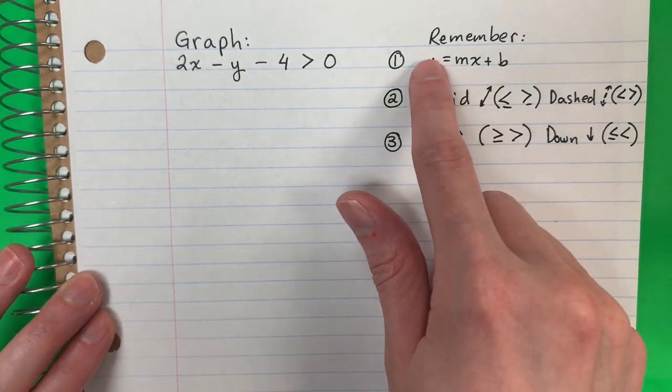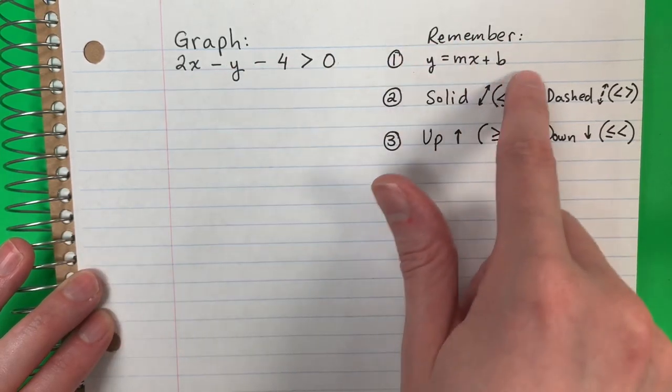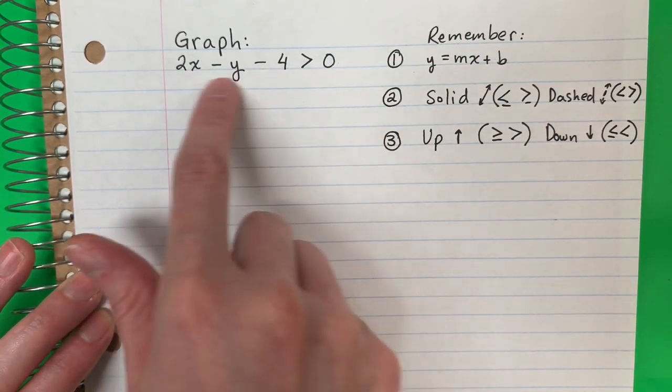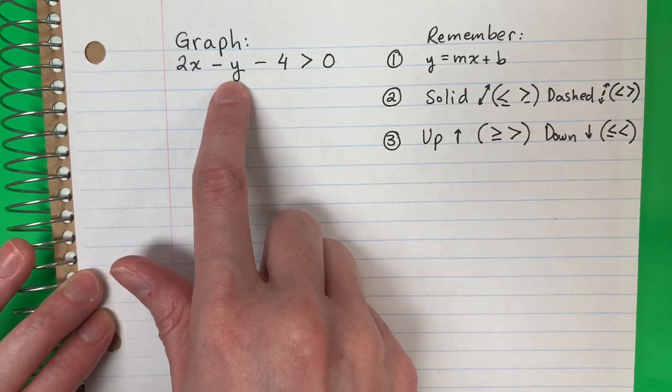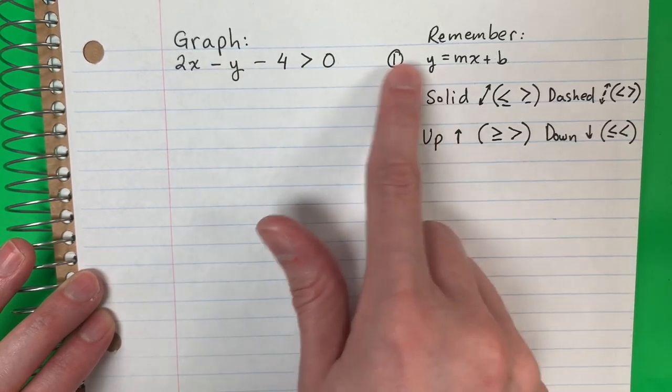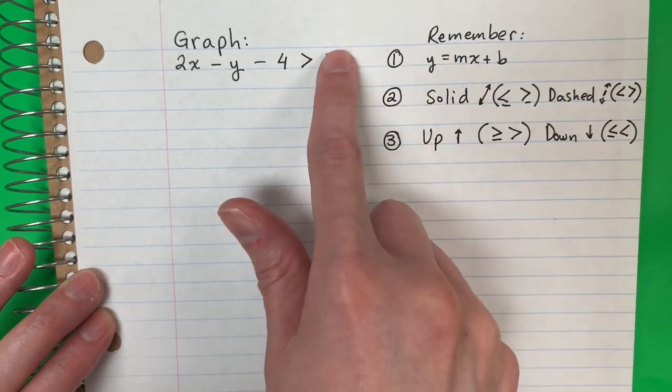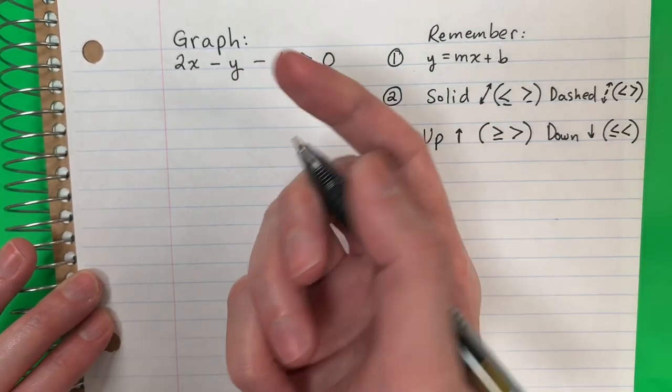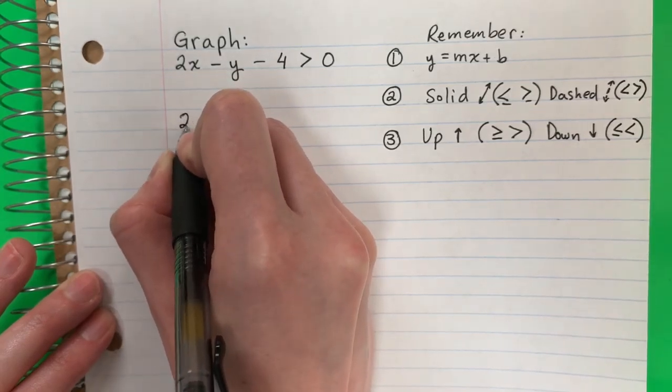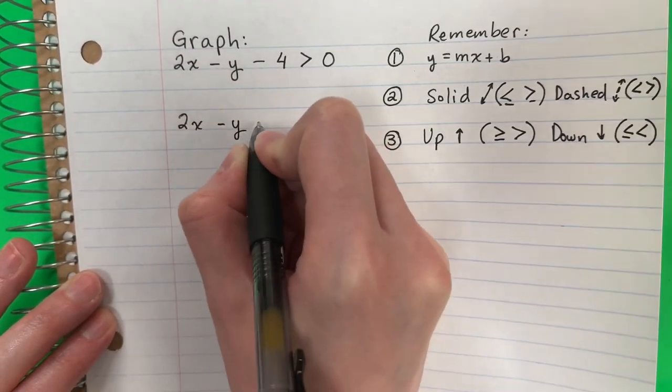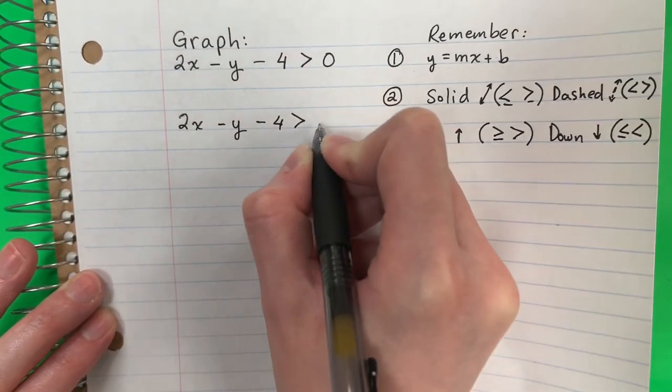El primer paso es que necesito este en la forma slope-intercept form. Este no está en el slope-intercept form porque la y no está sola a la izquierda y el mx no está a la derecha, en el medio. So we need to fix this. Vamos a arreglar esto. So I'm going to copy and I'm going to fix it. Voy a copiar y voy a arreglarlo.